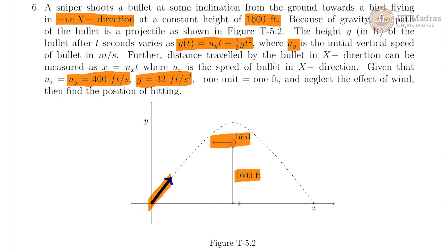And then the distance travelled by the bullet in the x direction is given by x equals u_x times t, and u_x is equal to u_y, which is 400 feet per second. Neglecting the effect of the wind and everything,